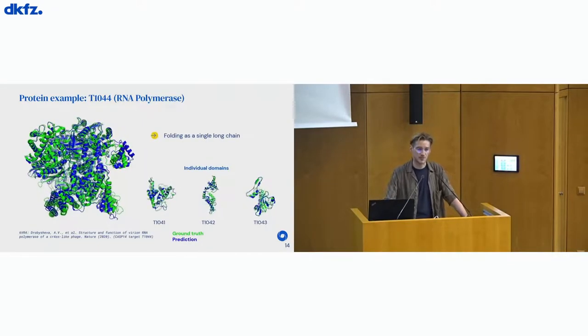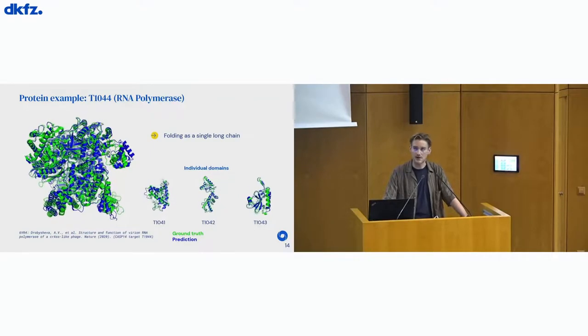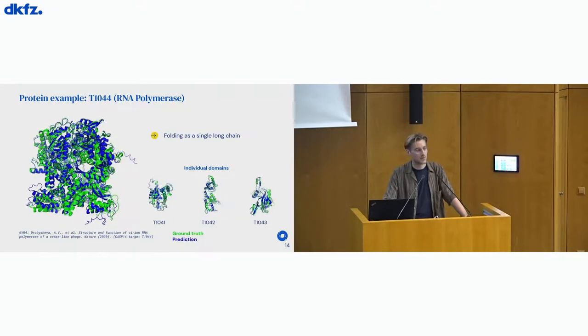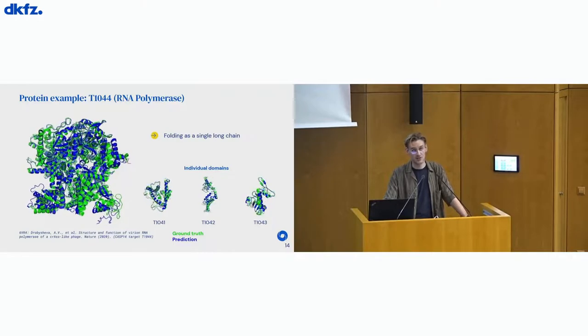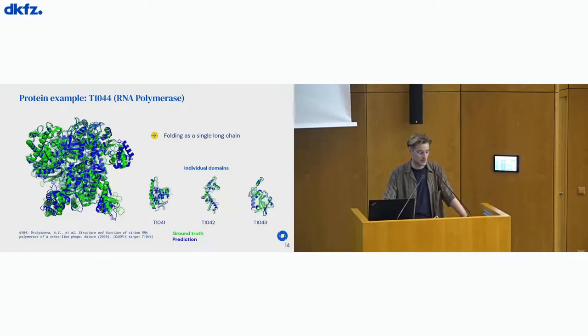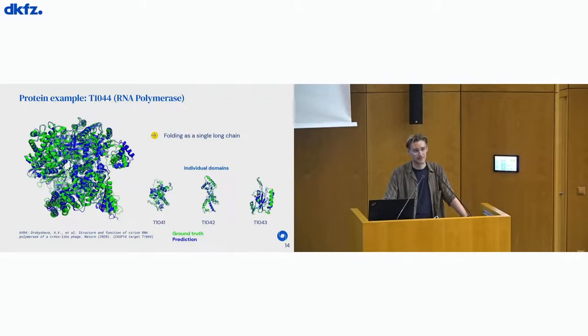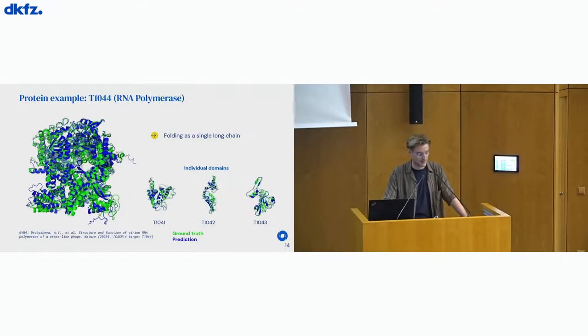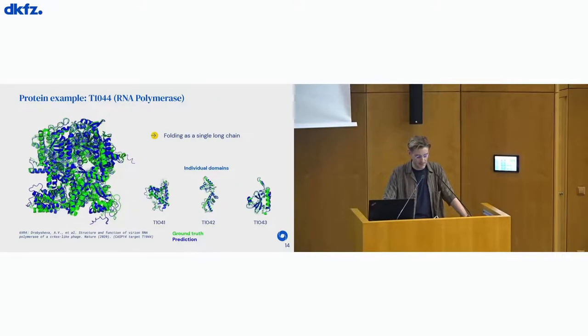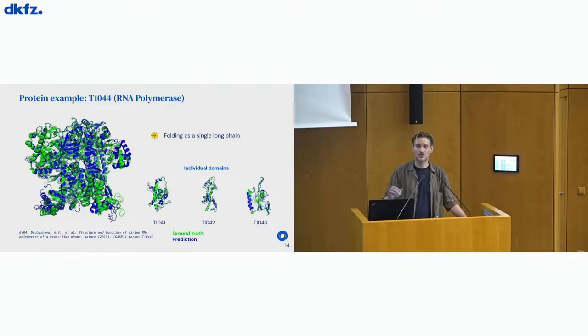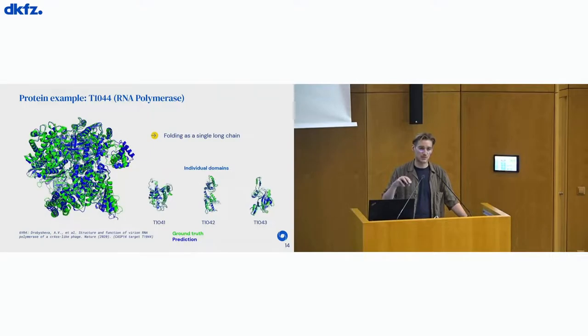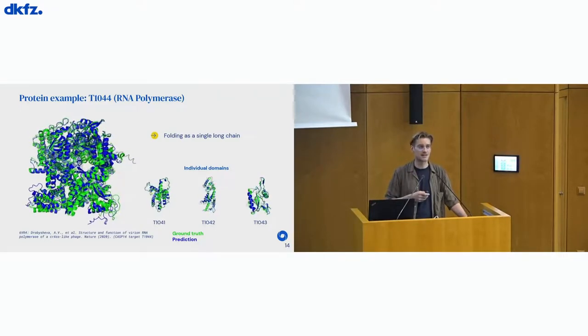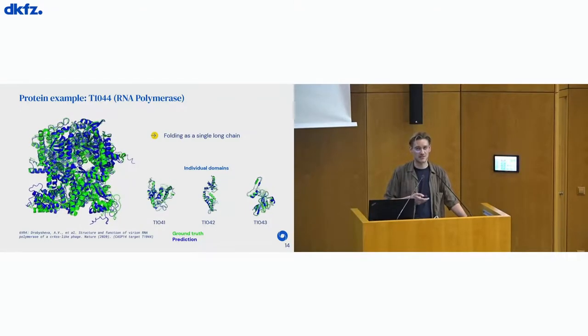Now, this is another example that was posed as a task at CASP. It's an RNA polymerase. It's a really large protein consisting of more than 1,000 amino acids. Before AlphaFold 2, computationally, it was really hard to even try such large structures, let alone sort of being successful at it. And again, sort of from this overlay, you can see that the prediction and the ground truth is very close and a very good prediction in this case. Also, on this slide, I'm highlighting three crops of subunits, structural subunits that are called domains. And even on the domain level, these sort of three smaller GIFs on the lower right-hand side, you can see that the structural match is really good.